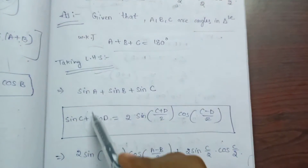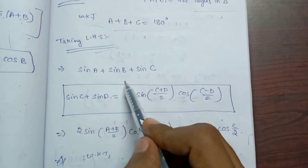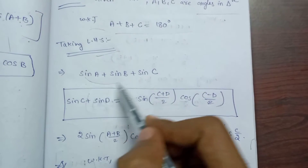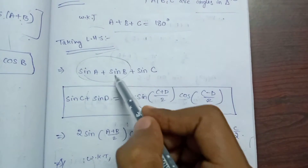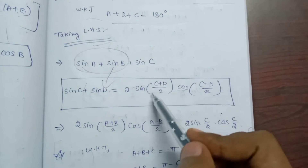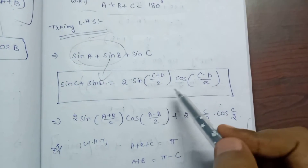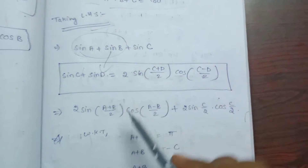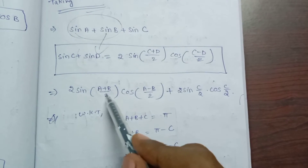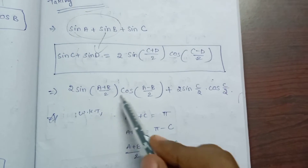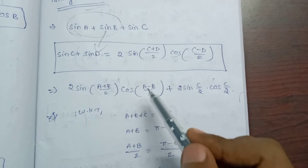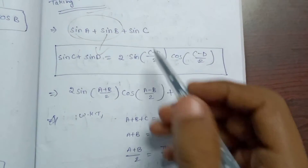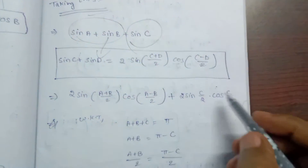Take LHS: sin A plus sin B plus sin C. Applying the sum-to-product formula sin C plus sin D equals 2·sin((C+D)/2)·cos((C-D)/2), we get 2·sin((A+B)/2)·cos((A-B)/2) plus sin C.